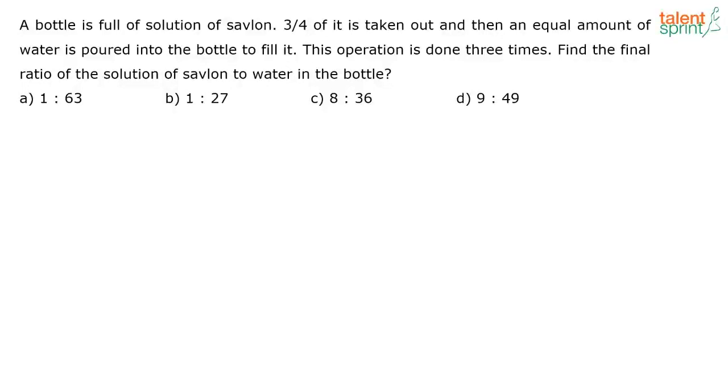A bottle is full of solution of Savlon. Three-fourths of it is taken out and then an equal amount of water is poured into the bottle to fill it. This operation is done three times. Find the final ratio of the solution of Savlon to water in the bottle.